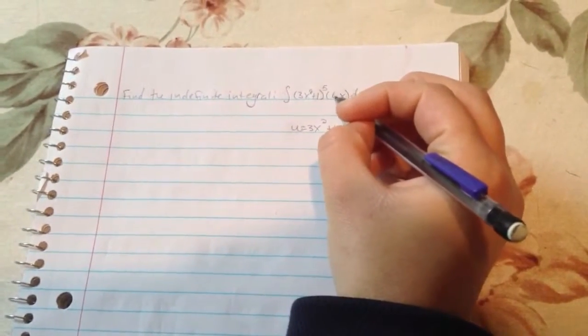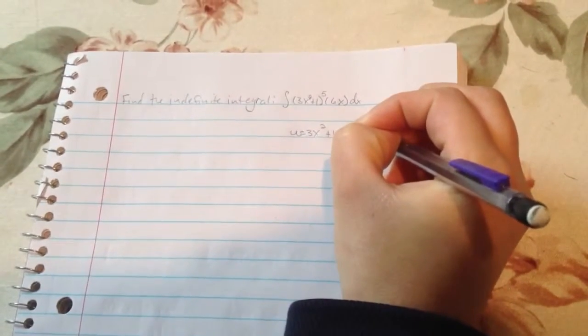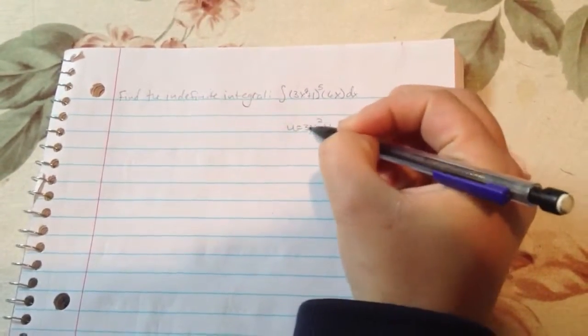This here is our g prime of x. We also call it du, and that should be equal to the derivative of this.